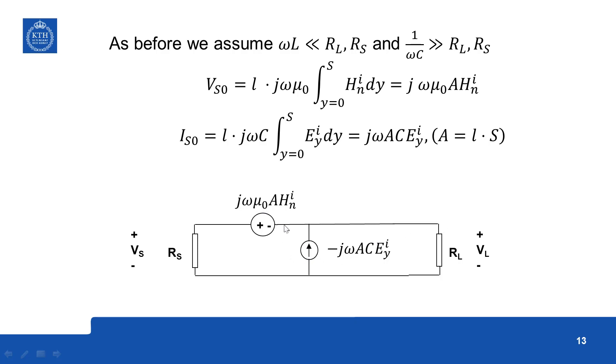And now we have just two sources, one representing magnetic field interaction and other magnetic field interaction and the two loads over there and we are interested in Vs, voltage across this and voltage across this.